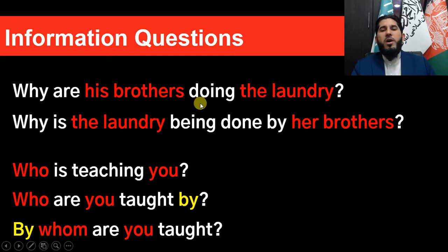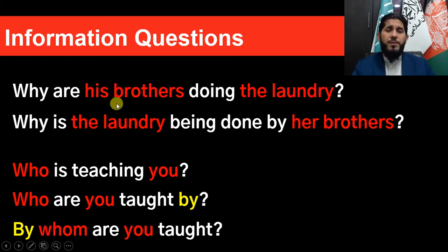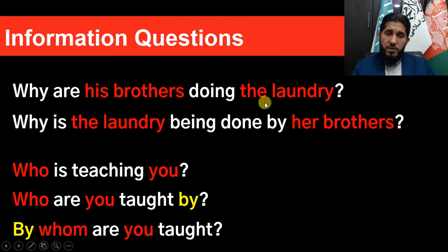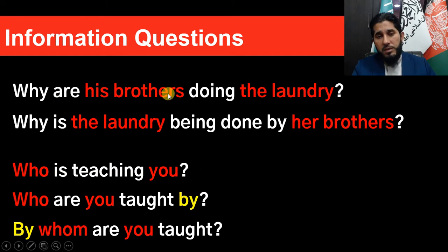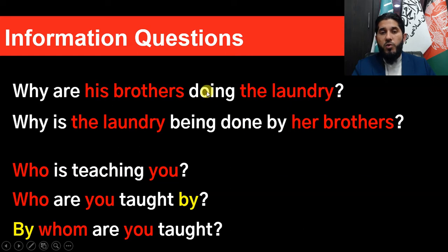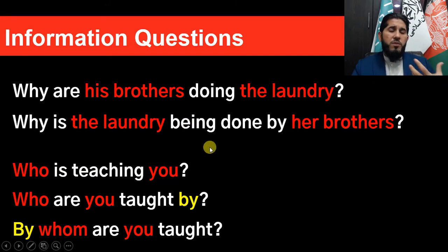For information questions: 'Why are his brothers doing the laundry?' 'His brothers' is the plural subject, 'doing' is the main verb, and 'the laundry' is the object. You bring the same WH question word at the beginning of your passive sentence, then the to-be verb according to the new subject. Here 'are' was used for the plural subject 'his brothers,' but 'is' is used because 'the laundry' is singular. Passive: 'Why is the laundry being done by his brothers?' — the verb is changed to third form 'done' with 'being' before it.